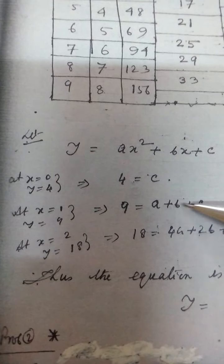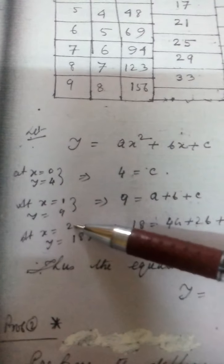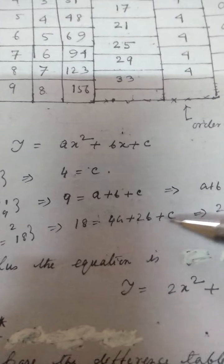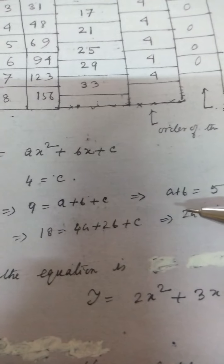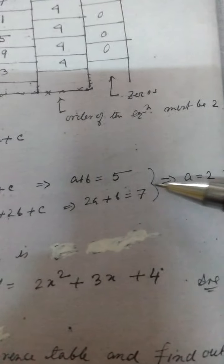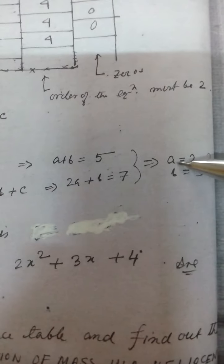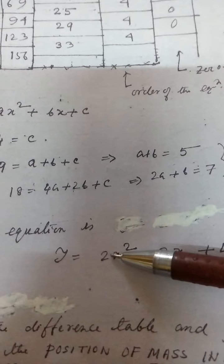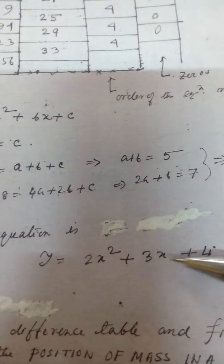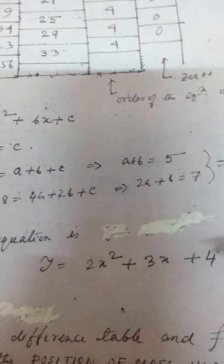When x=2, y=18, this gives a third equation. Solving these, we get a=2, b=3, and c=4. Substituting back, the complete expression is y = 2x² + 3x + 4, and this is the final equation.